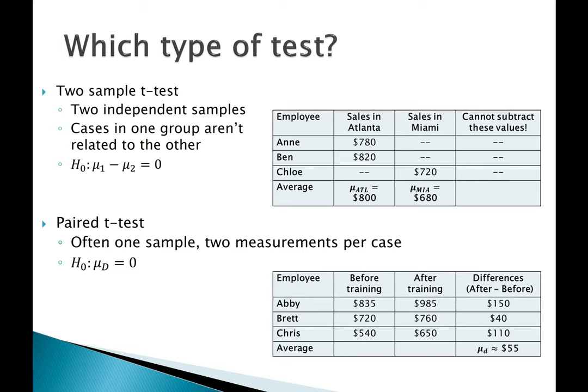People tend to have trouble telling the difference between a two-sample t-test and a paired t-test. In a two-sample t-test, you're comparing two independent groups — like sales in Atlanta vs. Miami — where individuals in one group aren't related to those in the other. With a paired t-test, you typically have one sample with two measurements per case, like before-and-after training scores, where you calculate the difference each time. Anytime data come in pairs that need to stay matched up, use a paired t-test.